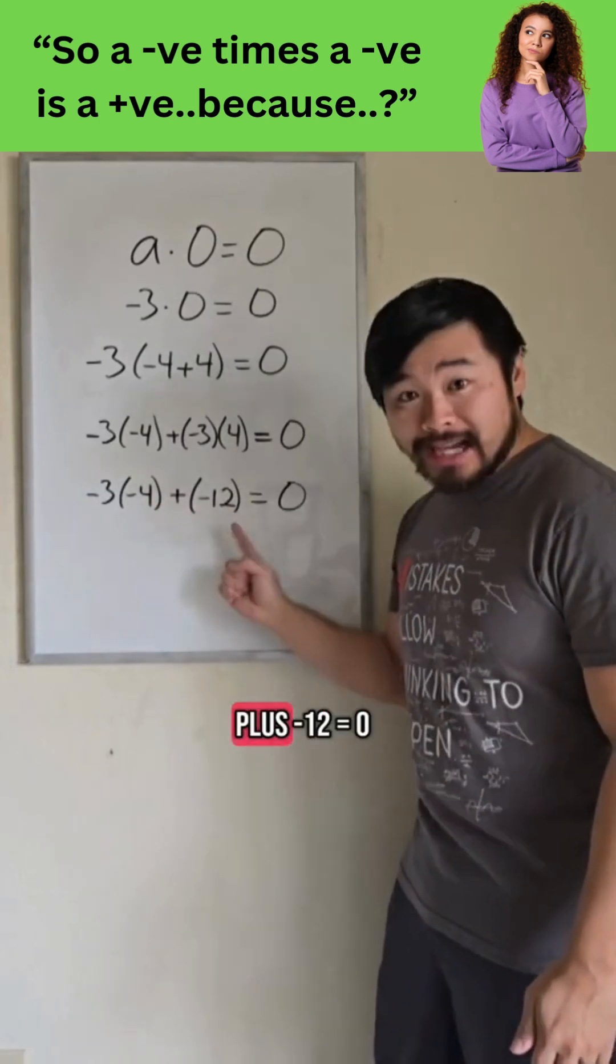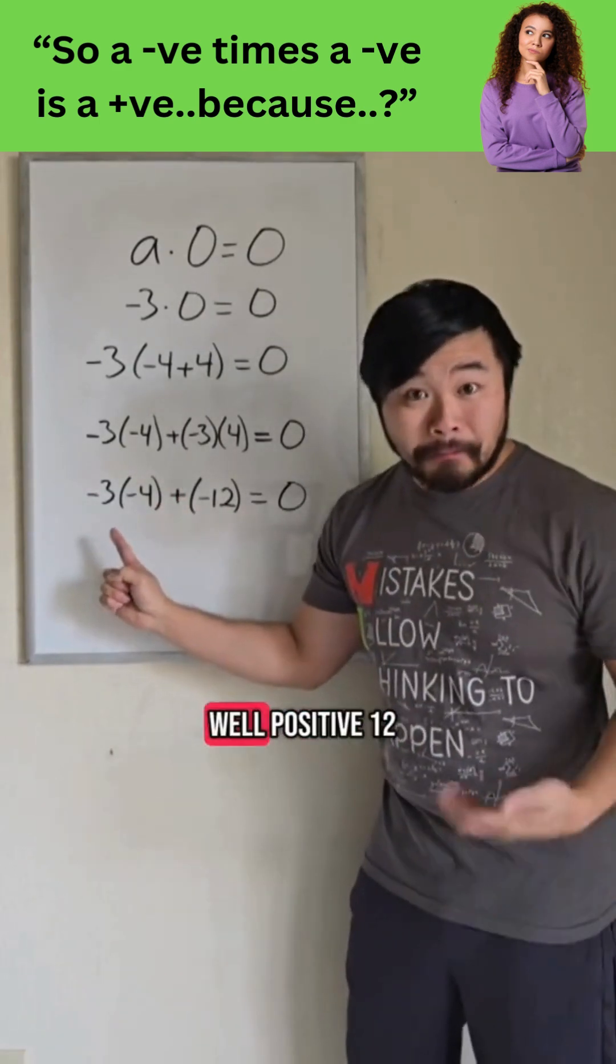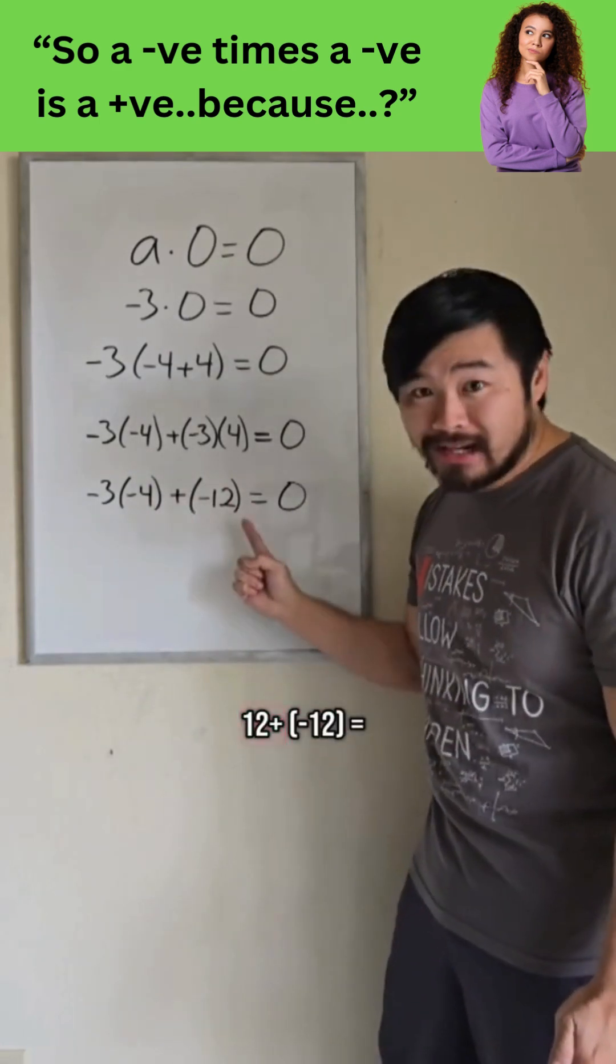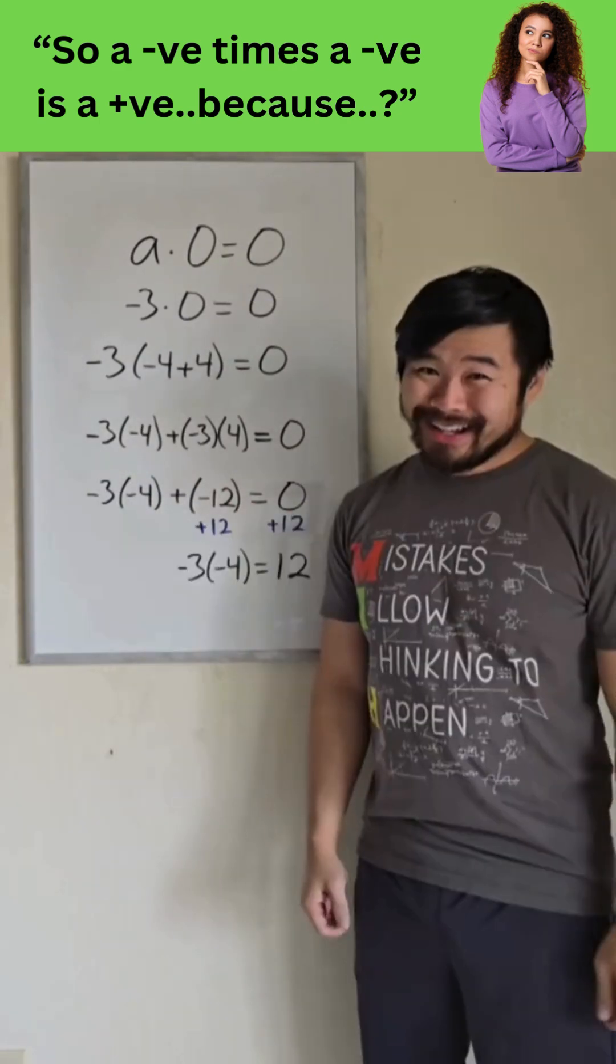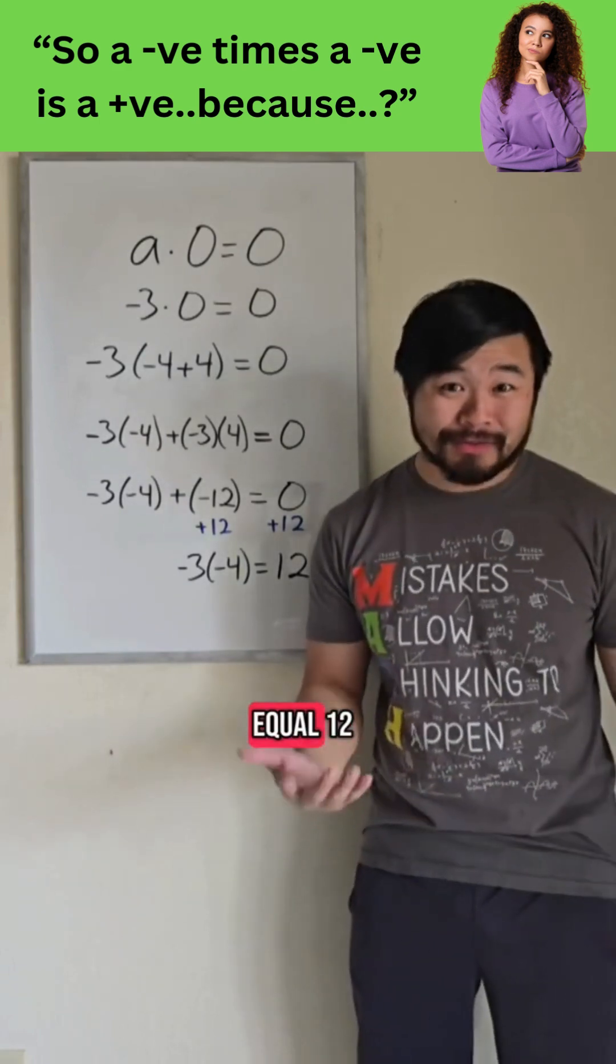So we have something plus negative 12 equals 0. So what does that force this to be? Well, positive 12. That's the only number that works here. Positive 12 plus negative 12 equals 0. So we see that negative 3 times negative 4 has to equal positive 12.